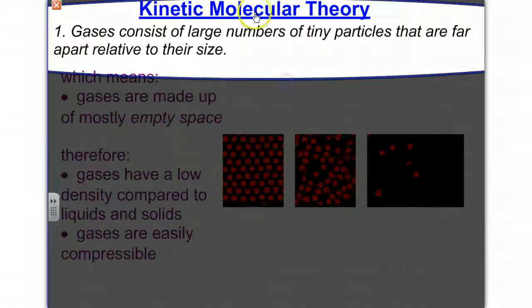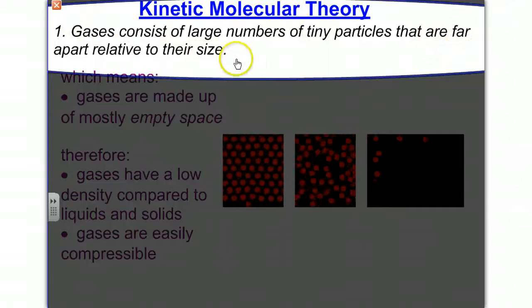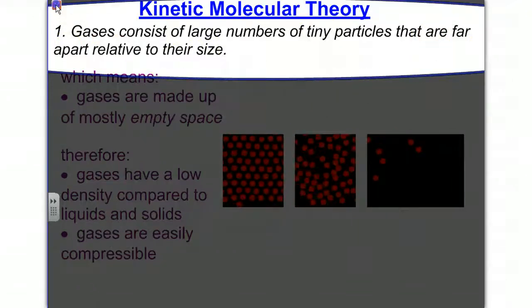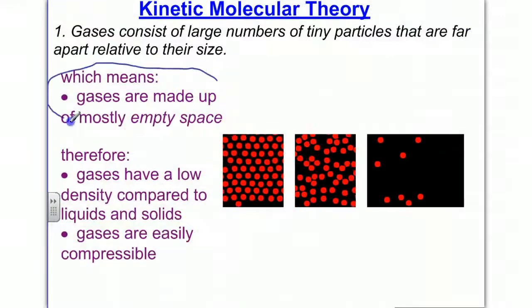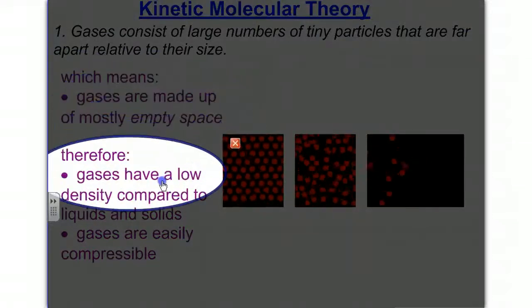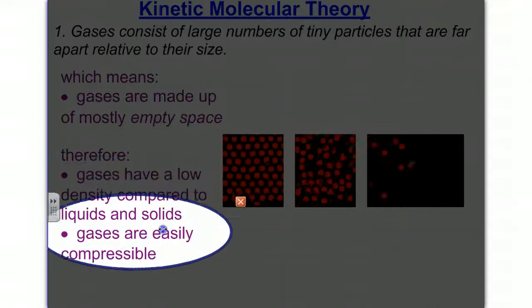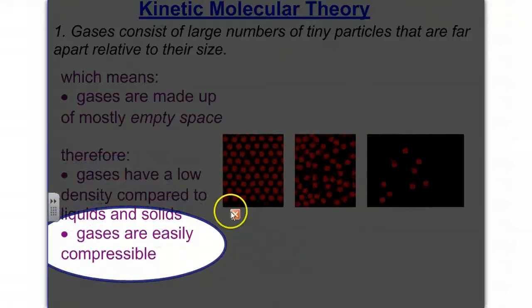The kinetic molecular theory has several assumptions. We'll start with the first one. Gases consist of large numbers of tiny particles that are far apart relative to their size. What this means is that gases are mostly made up of empty space. Therefore, they have a lower density compared to liquids and solids, and gases are easily compressed.